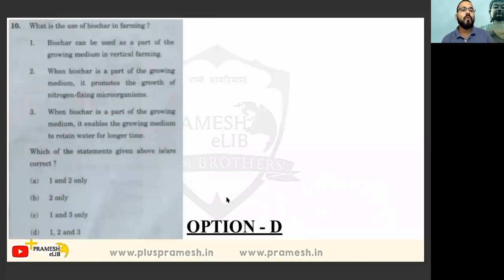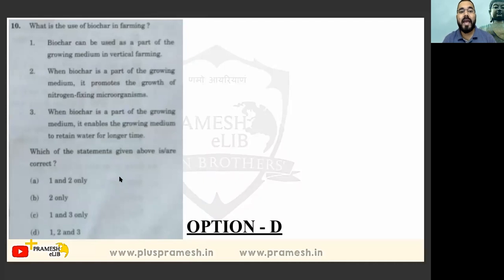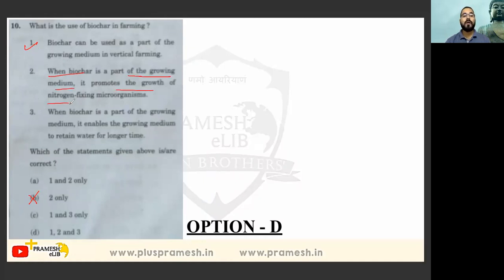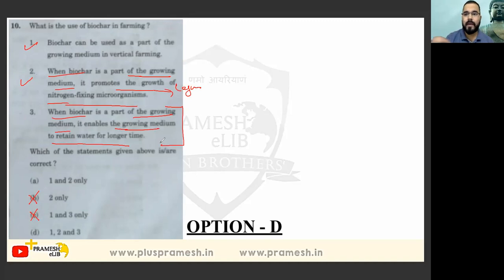What is the use of biochar in farming? Biochar can be used as a growing medium in vertical farming — option one is true, so eliminate wherever option one is missing. When biochar is part of the growing medium, it promotes nitrogen fixation organisms — option two is correct. When biochar is part of the growing medium, it enables the medium to retain water for longer — option three is also correct. Therefore option D is the answer.